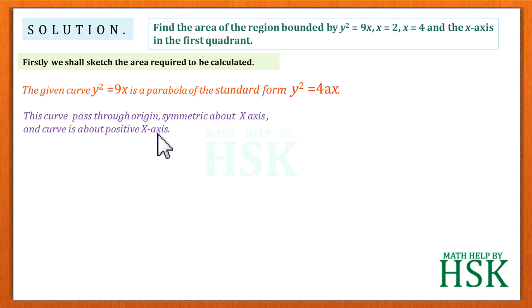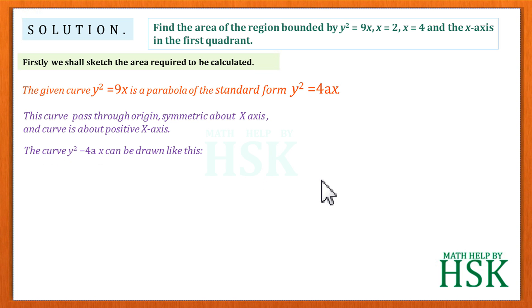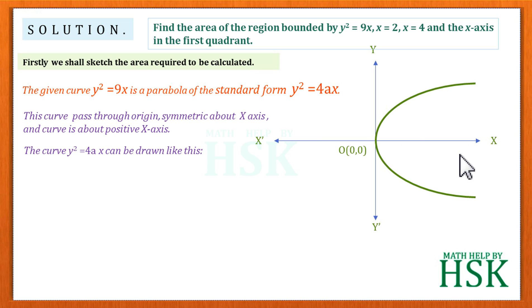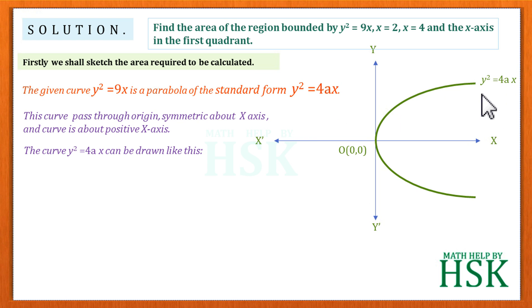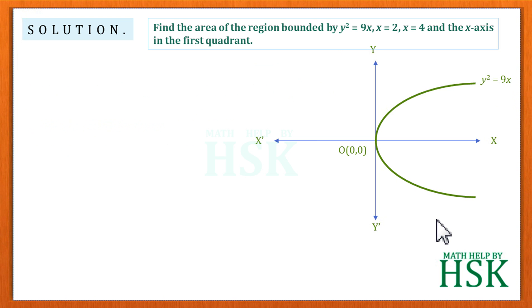The curve lies along the positive x-axis. We draw the parabola along the positive x-axis, and the sketch of y² = 4ax looks like this. Since y² = 4ax is very similar in form to y² = 9x, we consider y² = 4ax as y² = 9x, where 4a = 9. So we can consider this curve as y² = 9x.